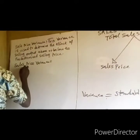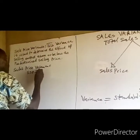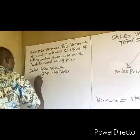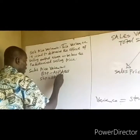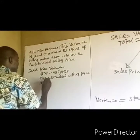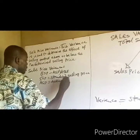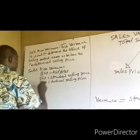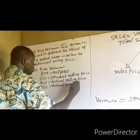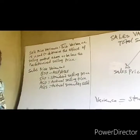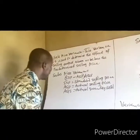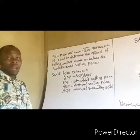Therefore, the sales price variance is the difference between the standard selling price and the actual selling price, multiplied by the actual quantity sold. SSP is the standard selling price, ASP is the actual selling price, and AQS is the actual quantity sold.